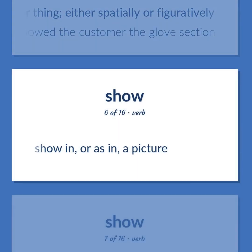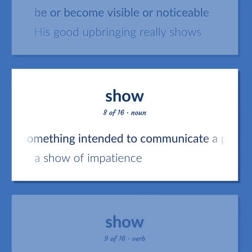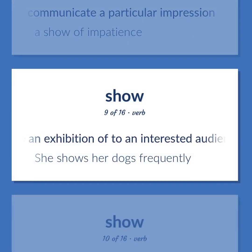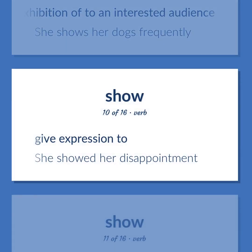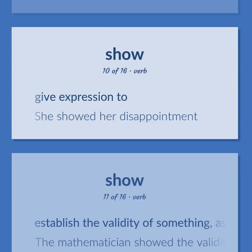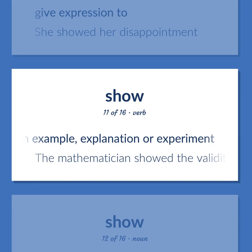Show: Be or become visible or noticeable — his good upbringing really shows. Something intended to communicate a particular impression — a show of impatience. Give an exhibition of to an interested audience — she shows her dogs frequently. Give expression to — she showed her disappointment. Establish the validity of something, as by an example, explanation, or experiment — the mathematician showed the validity of the conjecture.